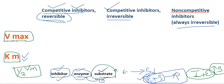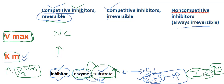Vmax, the maximum velocity of the reaction, is not changed in reversible competitive inhibition. Km is increased, because if we increase the substrate concentration there is more affinity of the enzyme to bind with the substrate — as affinity increases, Km increases.